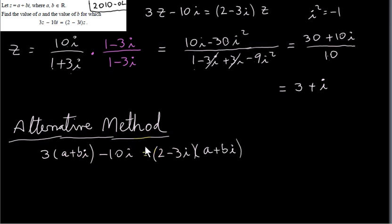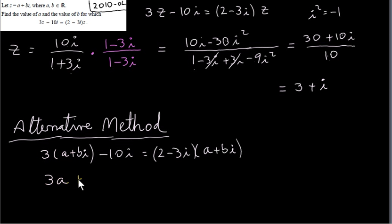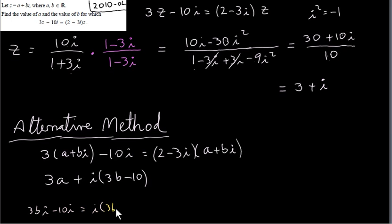An alternative method is to write z as a plus bi and substitute it directly. We know that a is 3 and b is 1. Replacing z with a plus bi in 3z minus 10i: the left hand side gives 3 times a, which doesn't involve i, plus i times 3b minus 10. So the left hand side as a single complex number has real part 3a and imaginary part 3b minus 10.